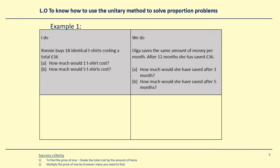So here we start with the unitary method to solve proportion problems. The unitary method means basically we're working out the price of one thing — we're working out the price of one thing.